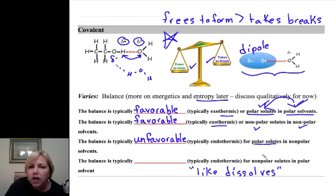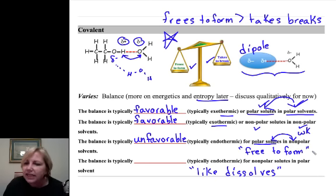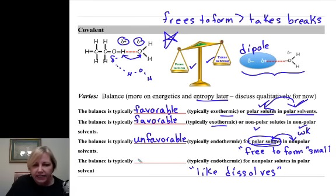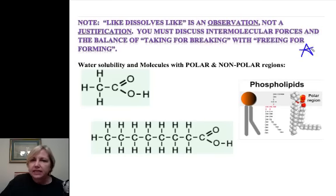The balance is typically unfavorable or endothermic if you have a polar solute which takes a lot of energy to break, and nonpolar solvents which take a little energy to break. But here's the deal, the attraction between a dipole and a London dispersion, this is a very weak attraction. So that free to form in this case, I'm trying to say this a lot so you really get it in your mind that energy is freed when you form attractions, this is going to be quite small. And it's not going to be nearly enough to overcome what's needed to break solute-solute interactions. And this is true here, unfavorable.